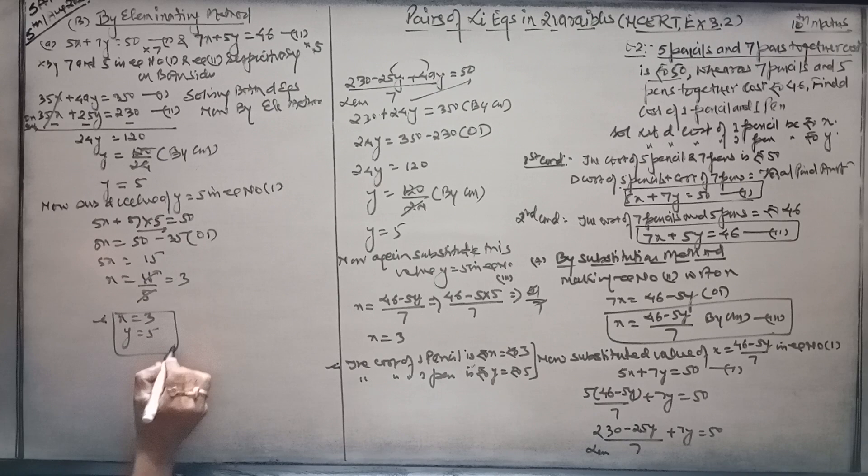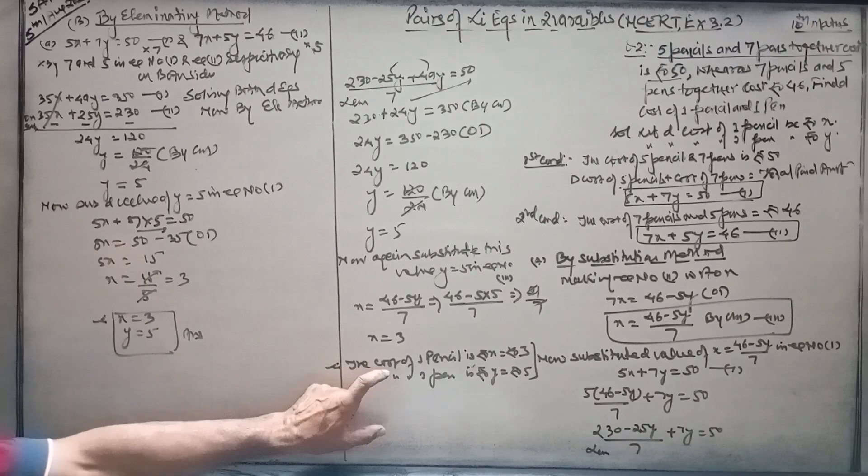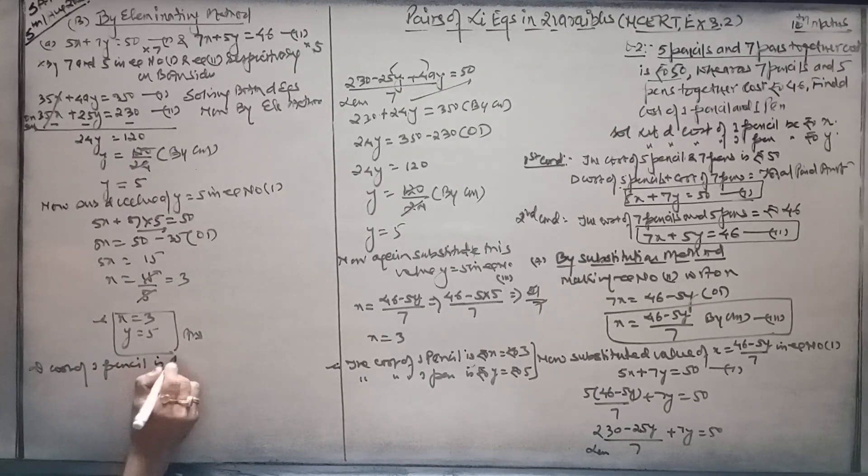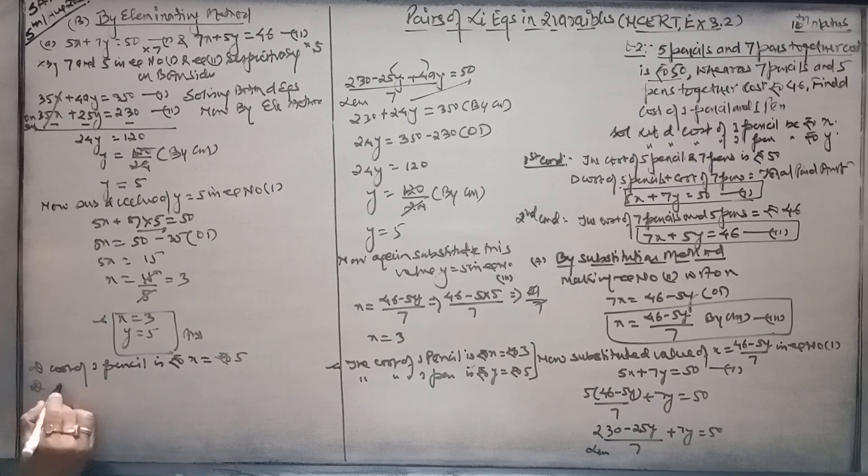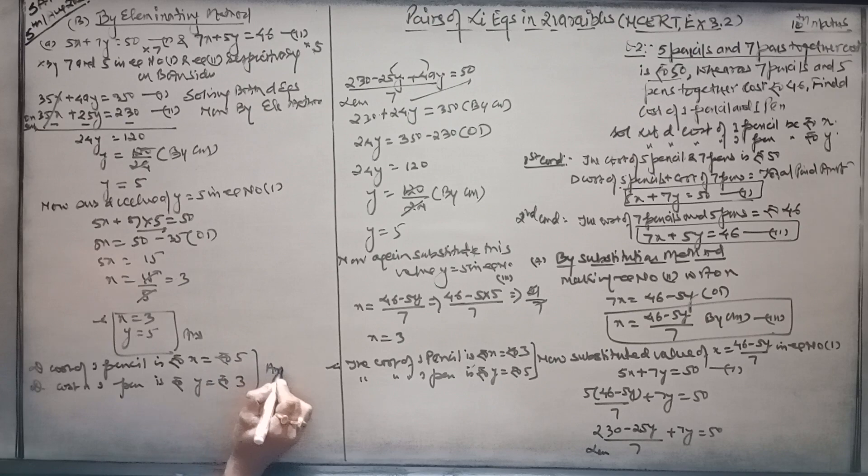x is equal to negative 4 and y is equal to 5. Because these are word problems, the cost of one pencil is rupees x. This is your answer.